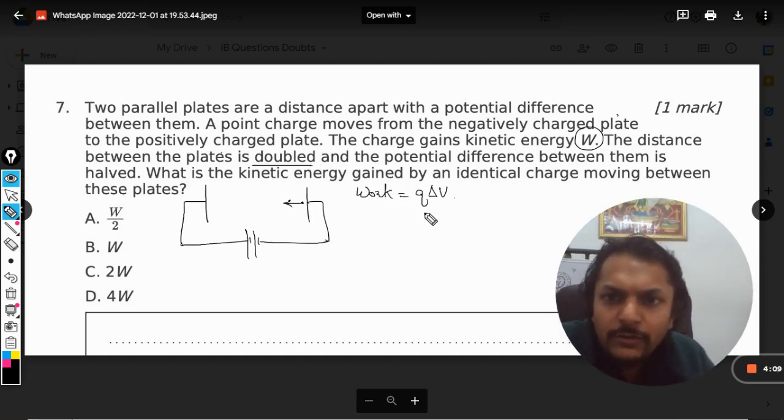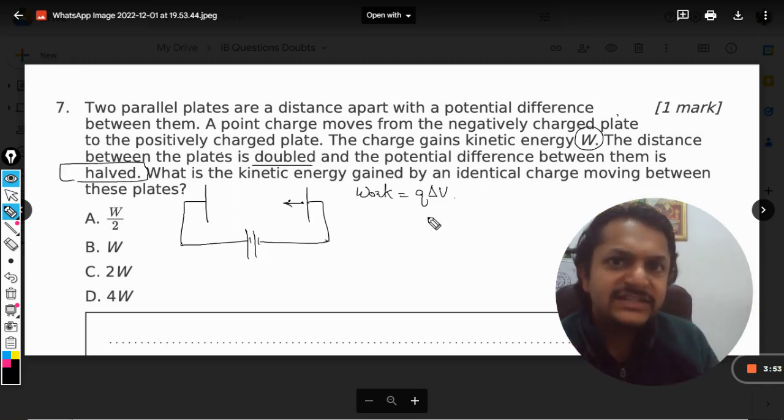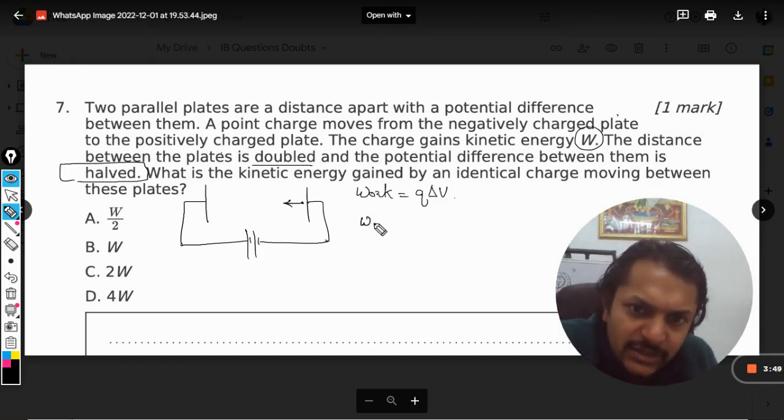This was case number one. The distance between the plates is now doubled, and the potential difference between them is halved. Now that is a problem, because with distance we do not have anything related with the work. So in this case, W2 should be equal to...